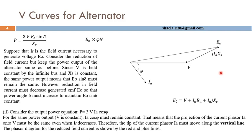The induced voltage E0 is the load angle delta from terminal voltage V. The induced voltage is directly proportional to flux, and also directly proportional to the field excitation. That means, if we vary the field excitation, the magnitude of E0 will change accordingly.